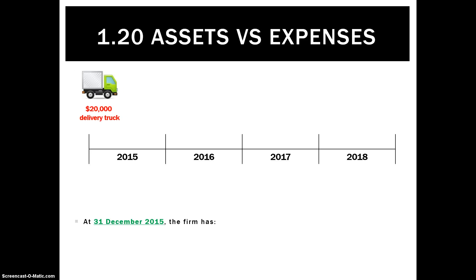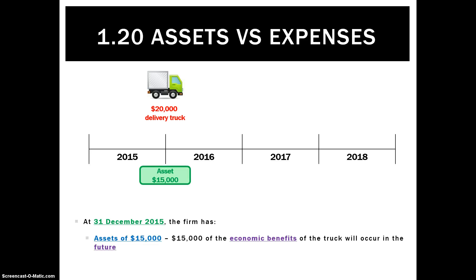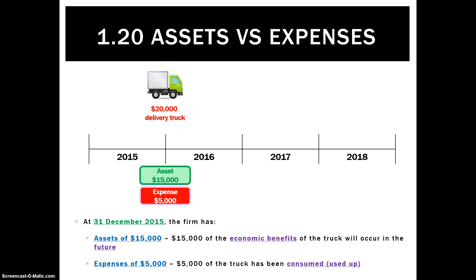However, a year goes by and we're at the end of 2015. What we've used now is we've consumed or used up the economic benefits of one quarter of the truck. That must mean there's $15,000 of economic benefits that will be consumed in the future, and therefore the expense must be $5,000 — that's the economic benefits we have consumed.